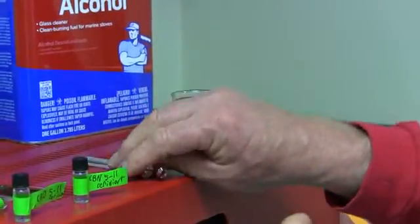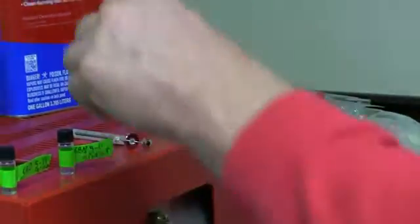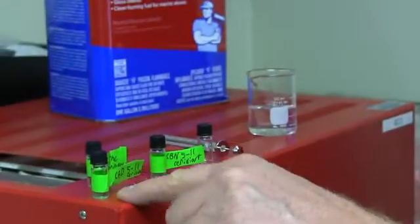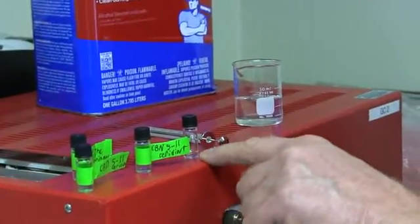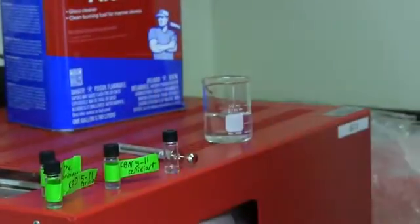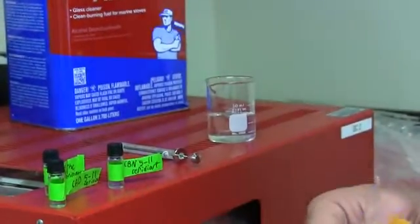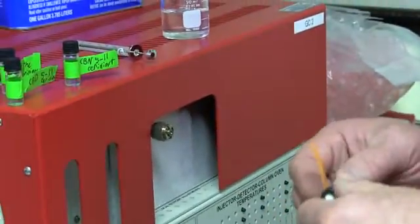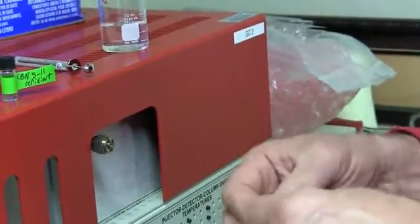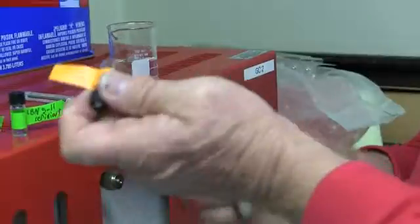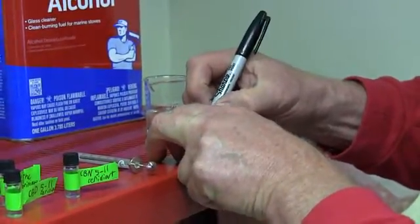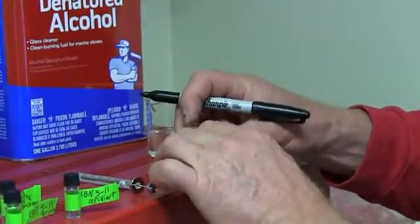So we now have, instead of each individual cannabinoid at a thousand nanograms per microliter, we mixed three of them together, equal amounts. So that means each one now is present in this bottle at 333.3 nanograms per microliter. So I'm going to label the bottle. Always label. Make sure you know what's in it because they all look alike once they're in the bottle. So we'll label this 333 nanograms per microliter.